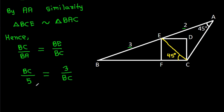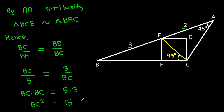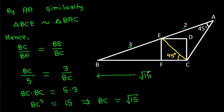Cross-multiplying, BC times BC equals BA times BE, which is 5 times 3. So BC squared is 15, which means BC equals root 15.